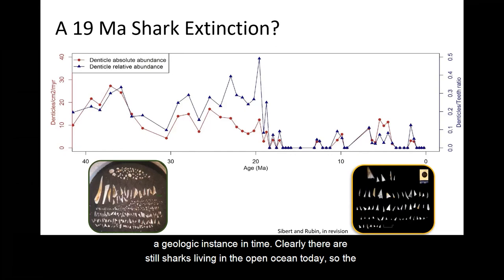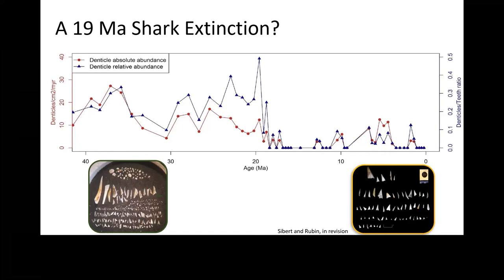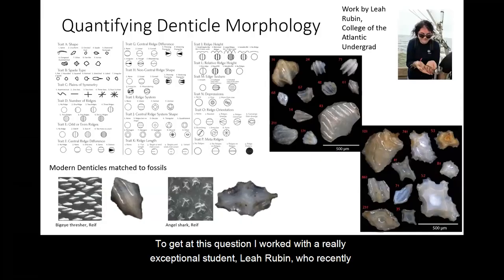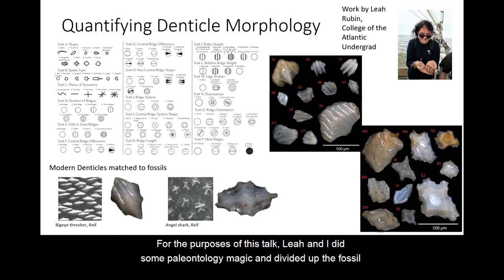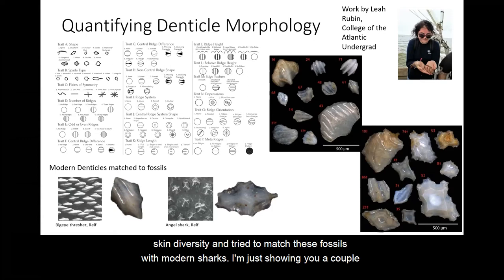Clearly, there are still sharks living in the open ocean today, so the next question to answer was: is this an extinction or is this just a reduction in abundance? To get at this question, I worked with a really exceptional student, Leah Rubin, who recently graduated from the College of the Atlantic. Together, we developed a tool set to quantify shark denticle morphological diversity to investigate this event. I'm skipping a lot of details here since this isn't really a paleontology talk, but I'd be happy to answer questions during the Q&A.